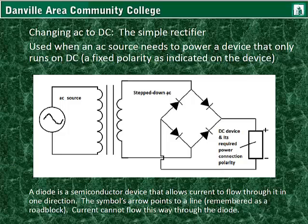Four diodes are what make up this type of rectifier. A diode is a semiconductor device that allows current to flow through it in only one direction. The symbol's arrow points to a line, as you can see here. This is remembered as a road block.